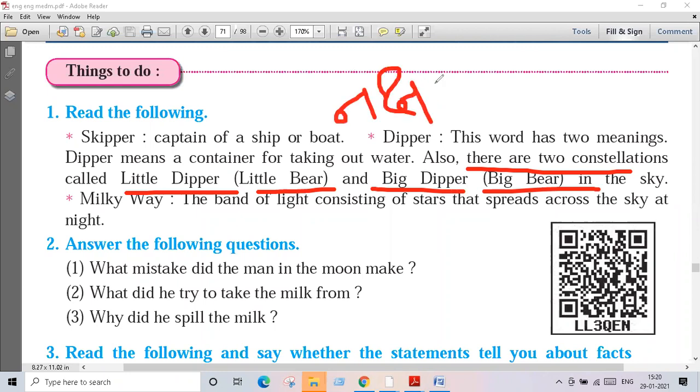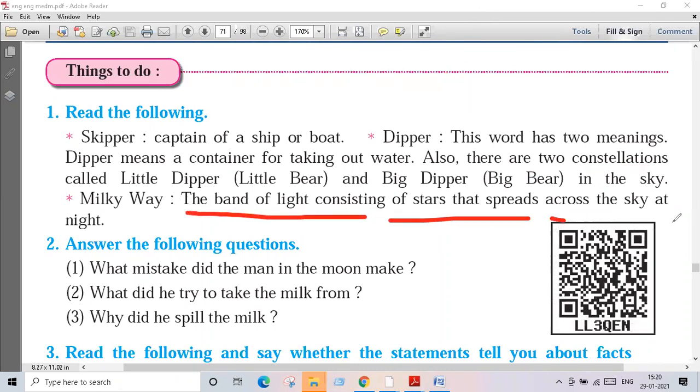If you see stars in the clear night, you can see different arrangements of stars and they give rise to constellations. What is Milky Way, guys? The band of light consisting of stars that spread across the sky at night is known as Milky Way, Akash Ganga.